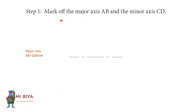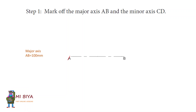In Step 1, you need to mark off the major axis, which is AB, and the minor axis, which is CD. As you can see, we've got the major X axis and A to B, which equals 100 millimeters. I've already drawn the major X, which is AB. Please note that the dotted line represents the center, and O represents our center point.